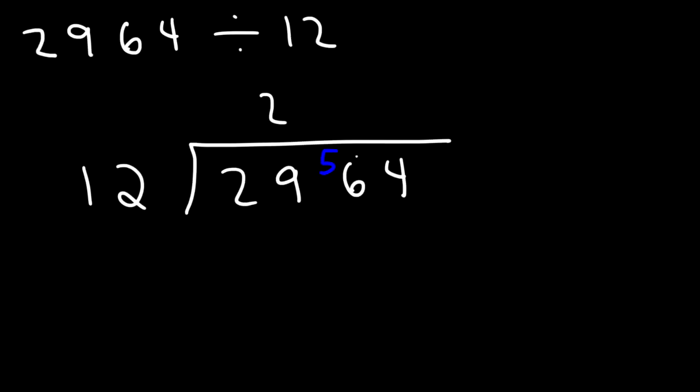Now how many times does 12 go into 56? Well 12 times 4 is 48. 12 times 5 is 60. And so that's too high. Therefore 12 goes into 56 four times. 12 times 4 as we mentioned before is 48. And the difference between 56 and 48 is 8.